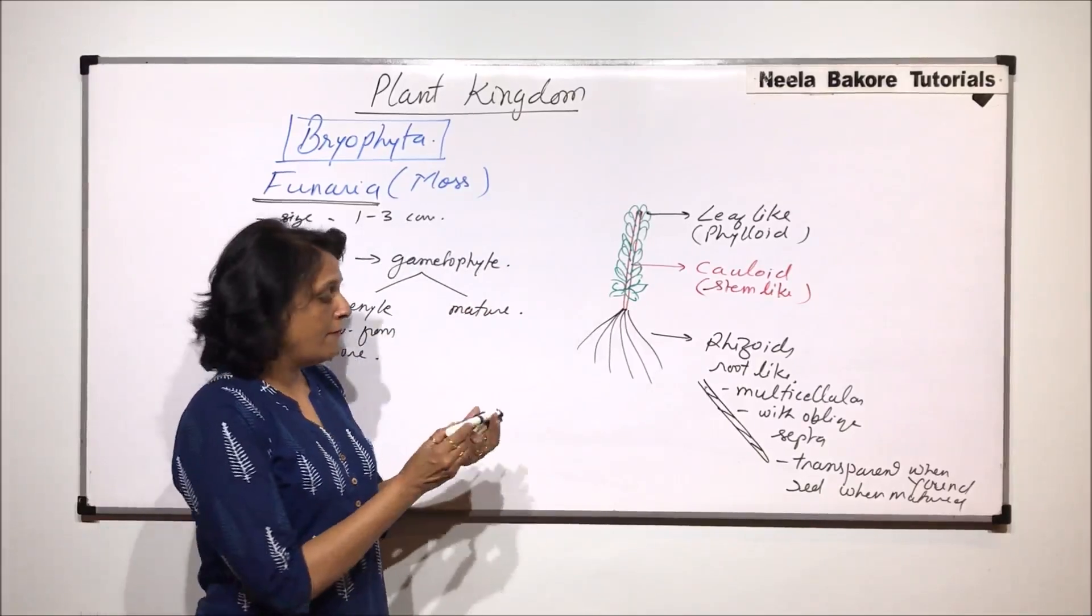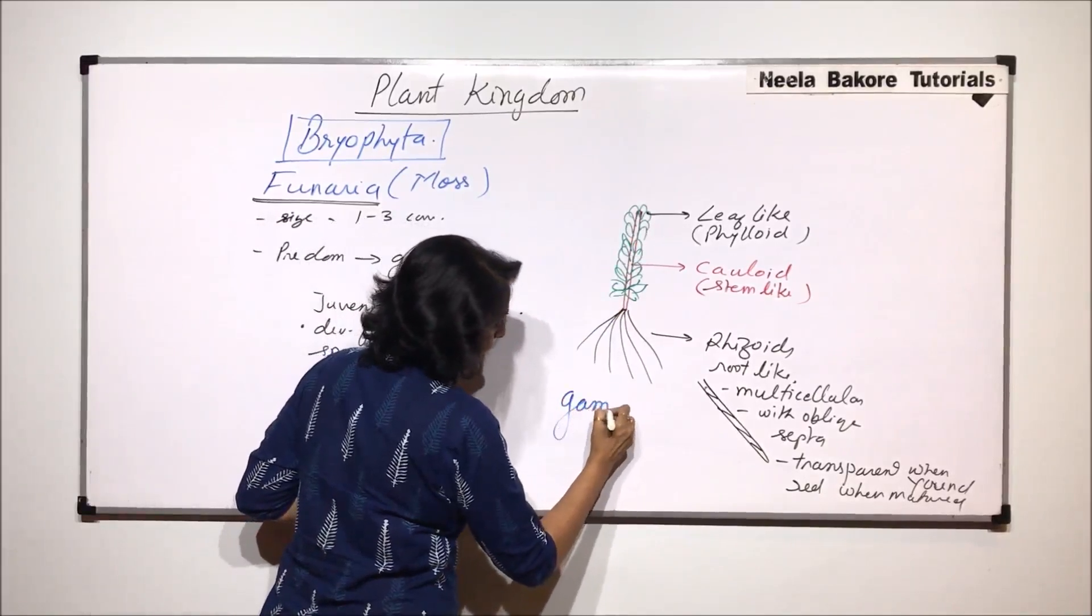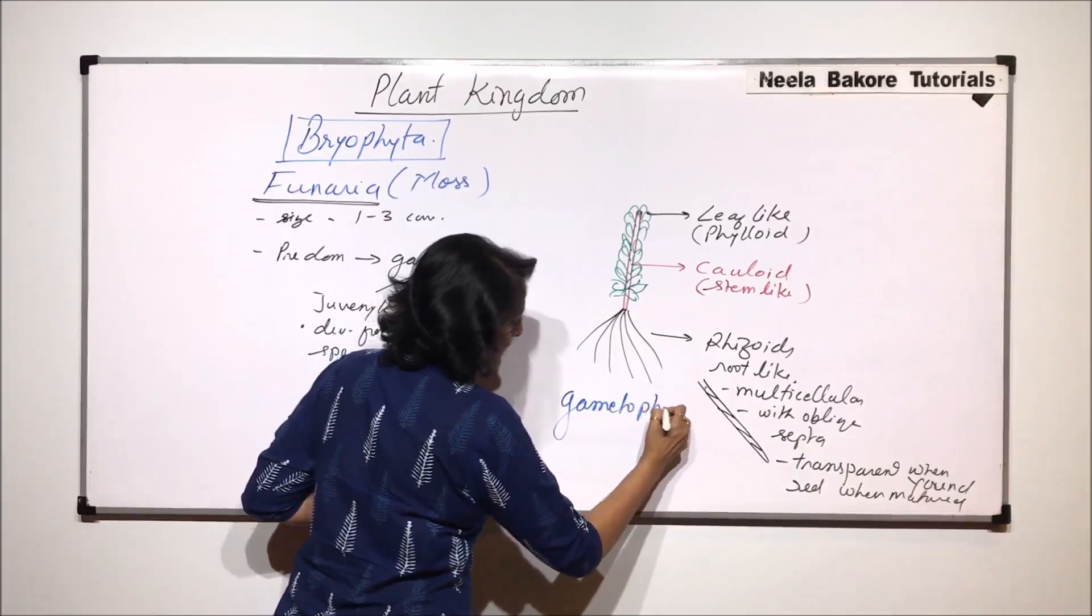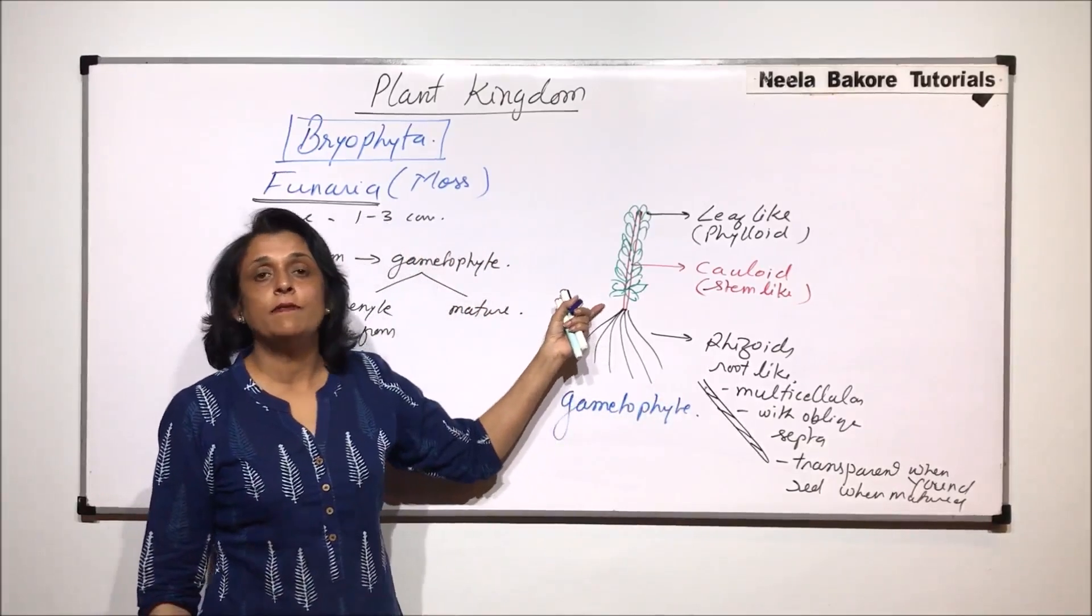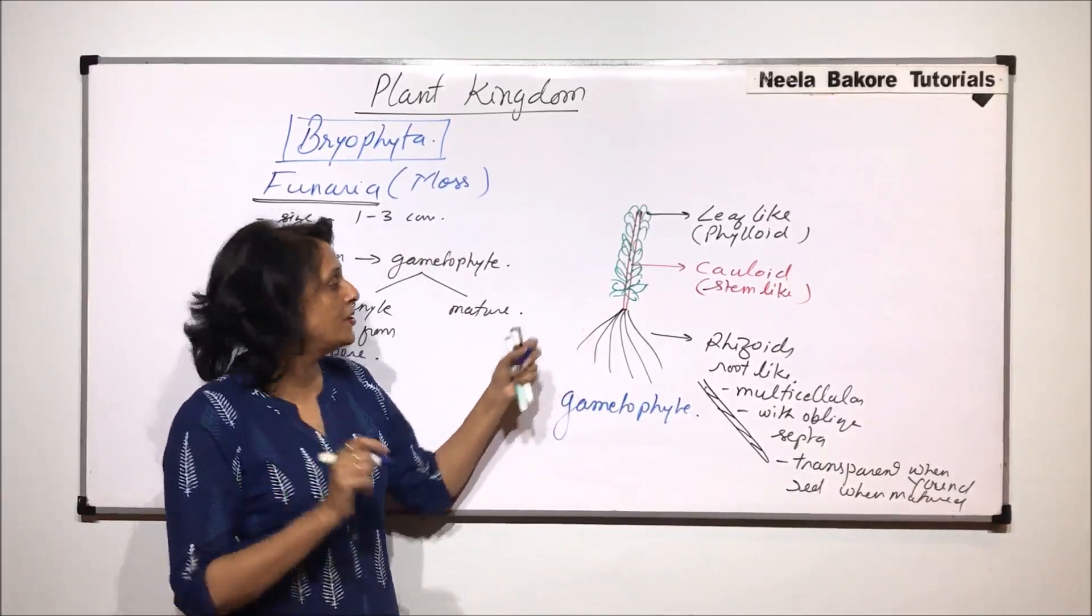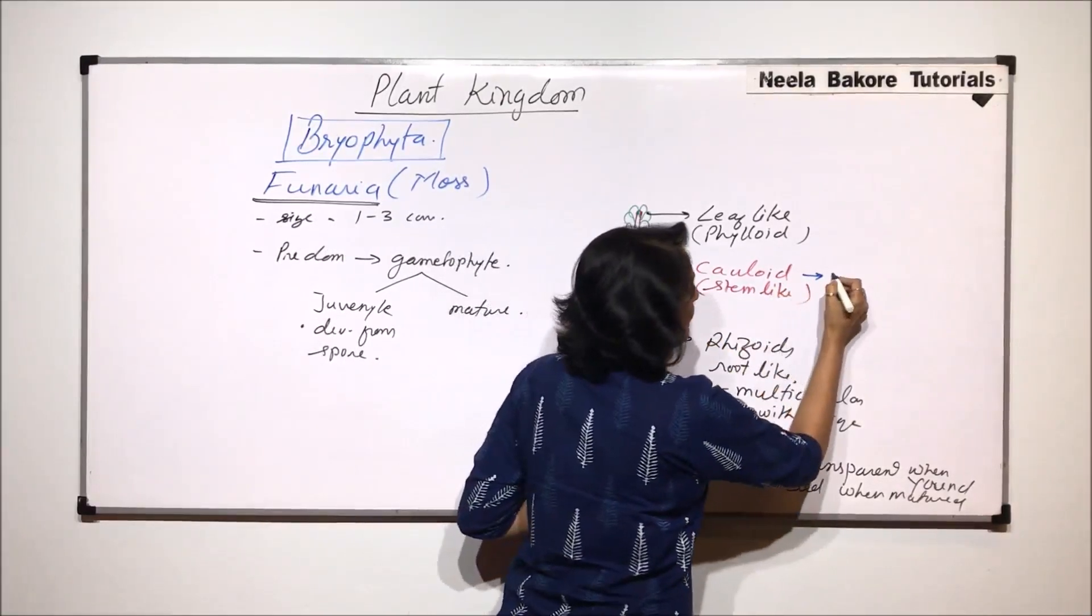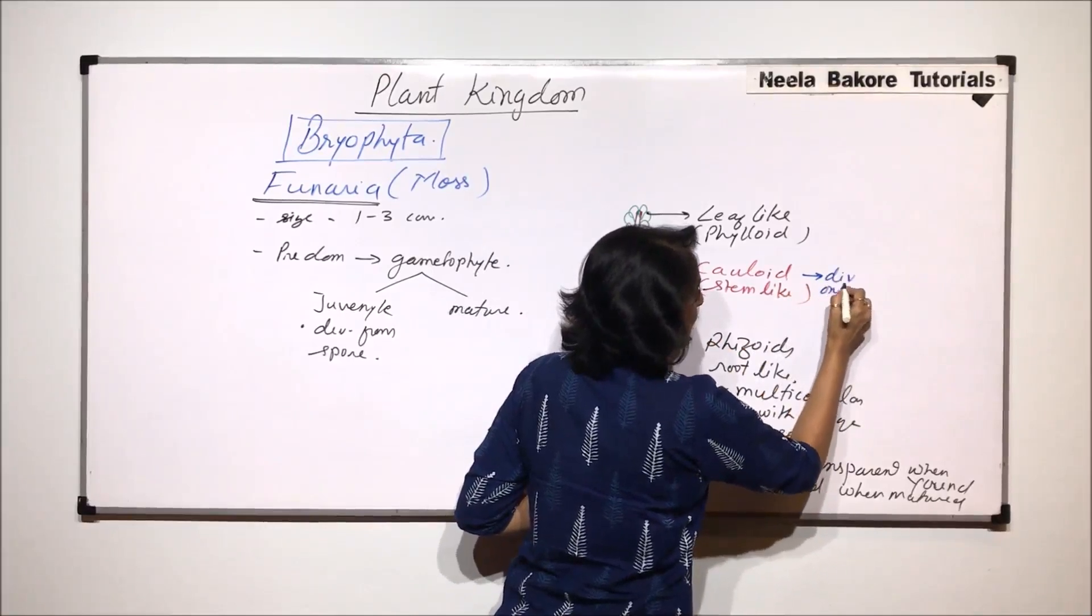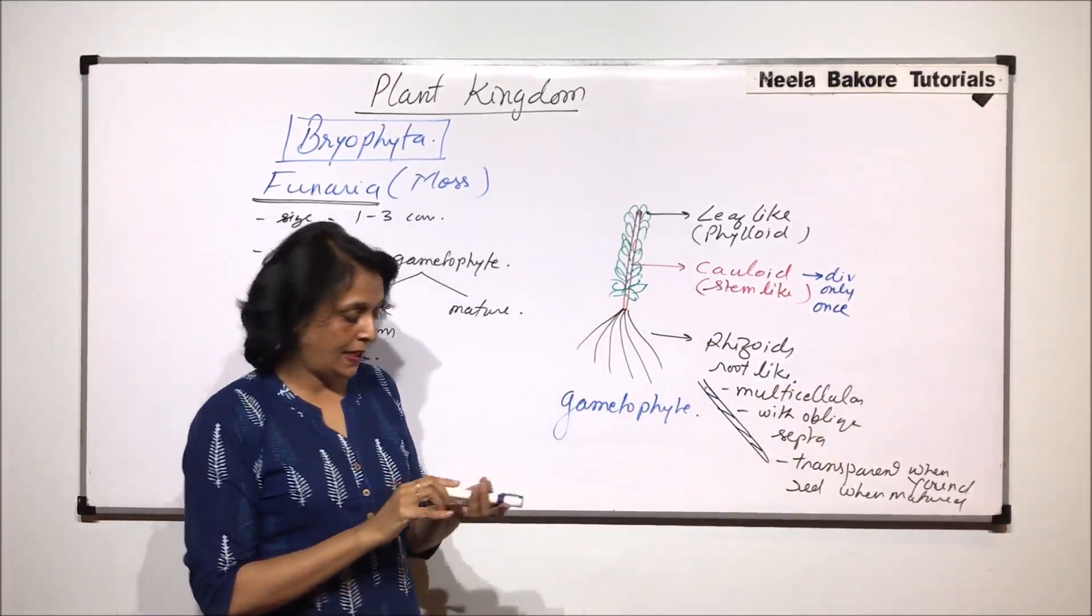Now normally when we are talking about this structure this is actually the gametophyte. When we see the gametophyte we normally see two branches. So the stem main axis it divides only once. So there would be only two branches seen.